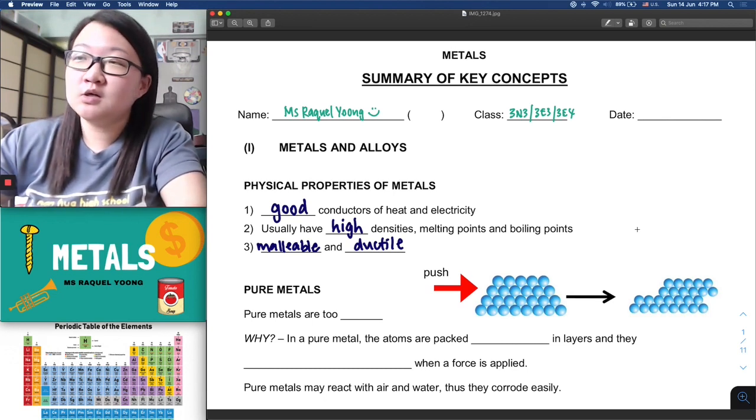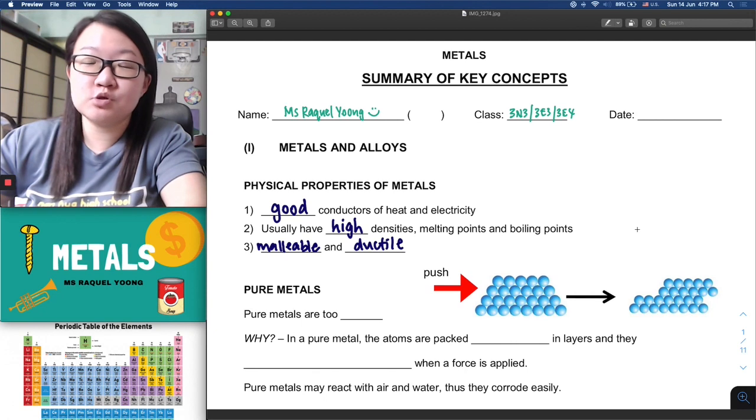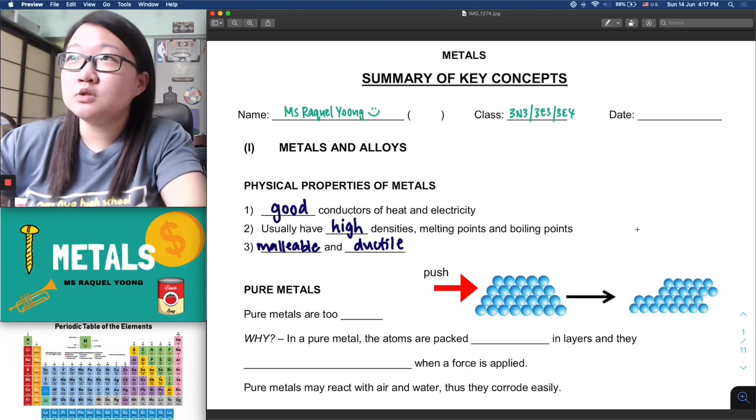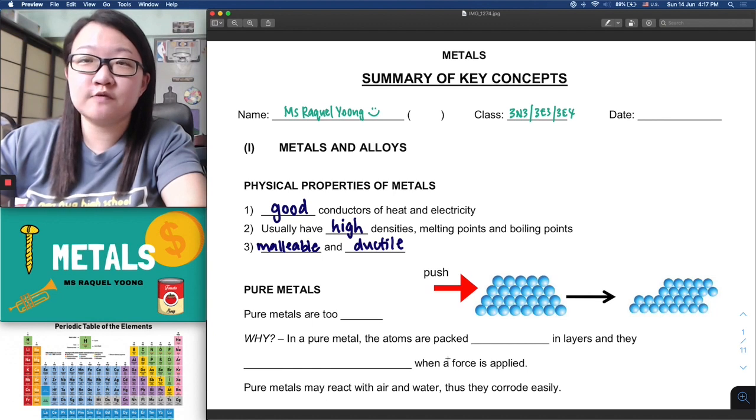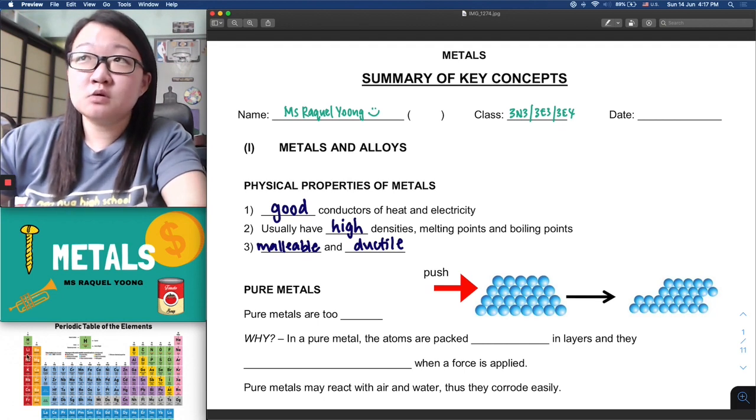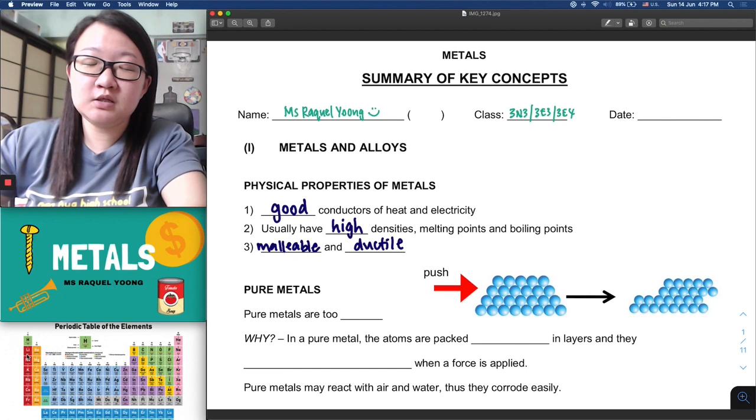For this chapter on metals, you should have seen a lot of things way back when you were in primary school, then in lower secondary science, and more recently when we did our lesson on the periodic table where we looked at the group 1 alkaline metals in great detail.